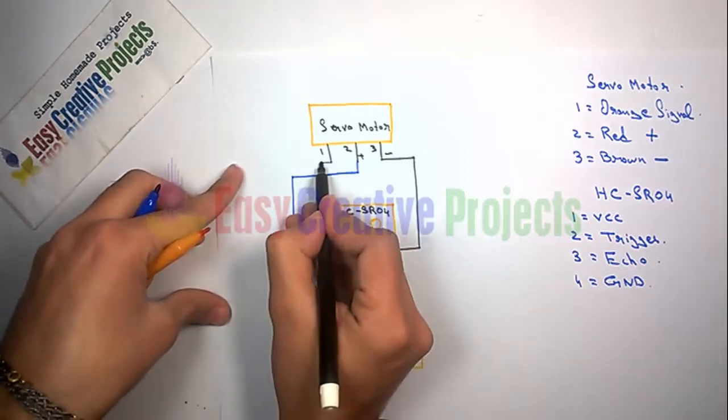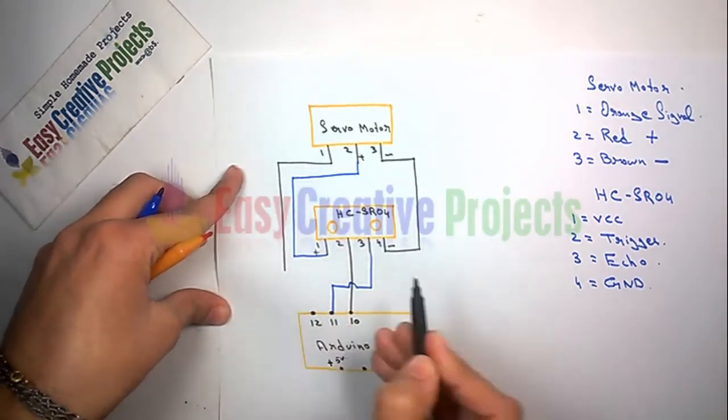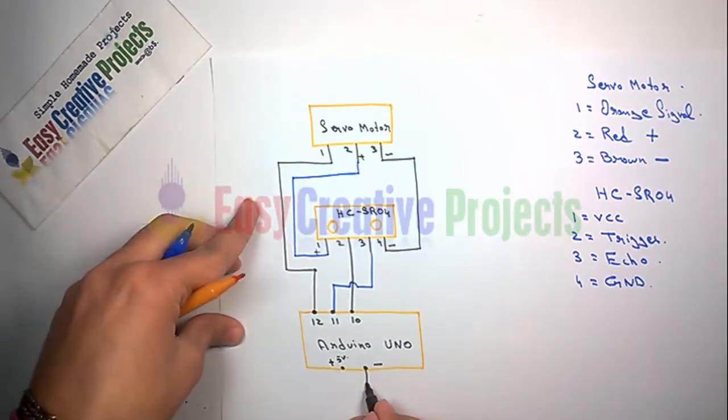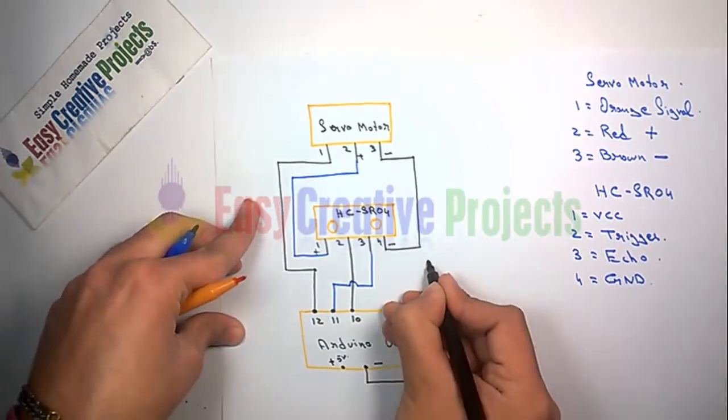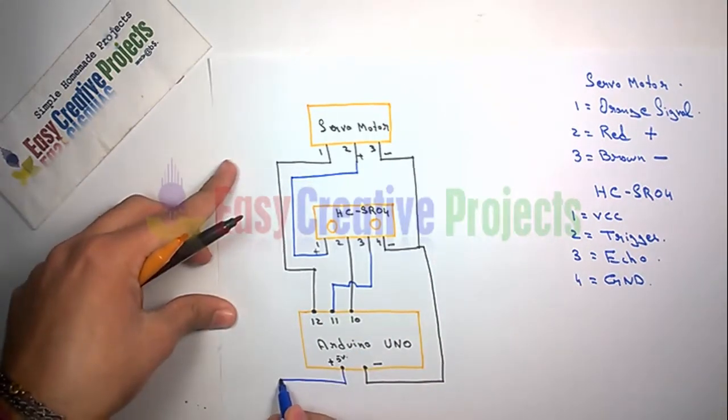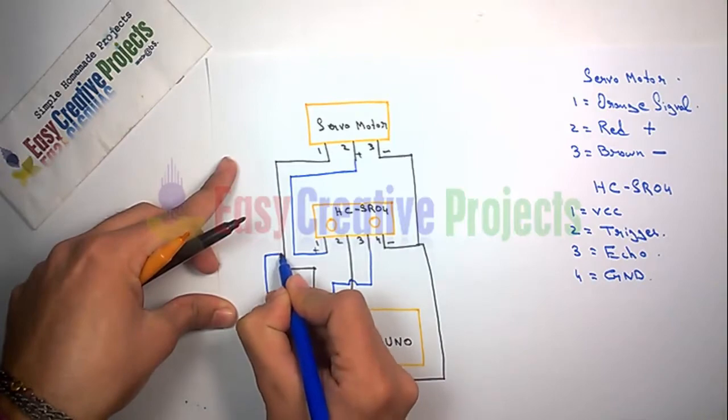Now connect Arduino pin 12 wire with motor signal wire. Finally, connect Arduino positive and negative wire with sensor and motor positive and negative wires like the diagram.